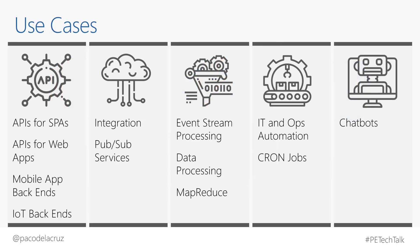When should we use serverless? The most obvious use case is writing APIs — backends for single-page applications, mobile apps, or IoT solutions. Another use case is integration scenarios where we need Pub/Sub services, sending messages from one system to another. We can also use it for event stream processing, data processing with parallel MapReduce, automation jobs similar to cron jobs — like running a job every day at 5am — and backends for chatbots.